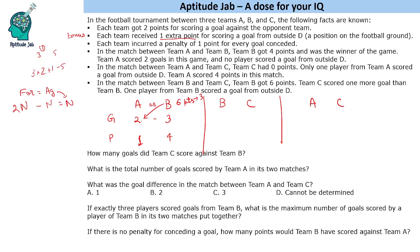In the match between B and C, team B got six points. Team C scored one more goal than team B, and one player from team B scored a goal from outside. If B scored N goals and C scored N plus one goals, then B's score is 2N plus one bonus minus (N+1), which simplifies to N points net.